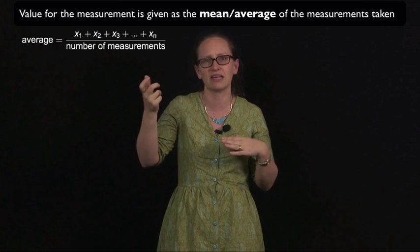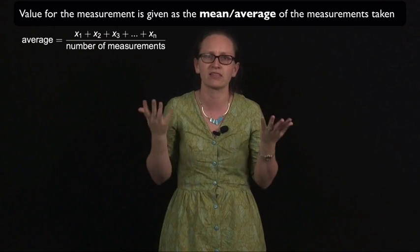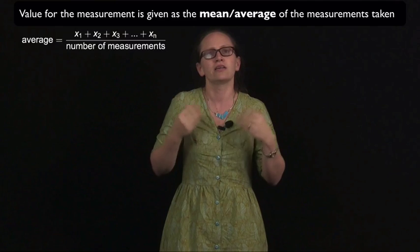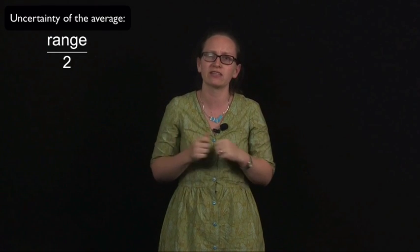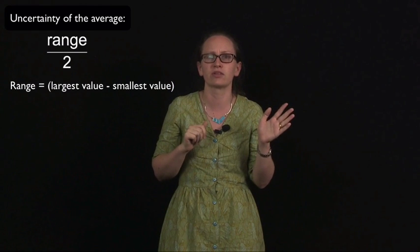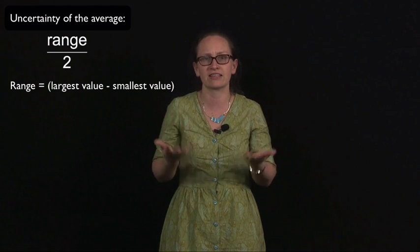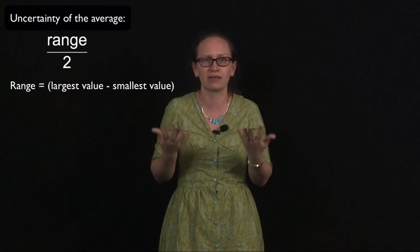The value for the measurement is then given as the mean or the average of the measurements that you've taken. In order to calculate the uncertainty, you can use the formula range divided by two. So the range of the values is equal to the largest value minus the smallest value, and then to get this as an absolute uncertainty, we just divide by two.